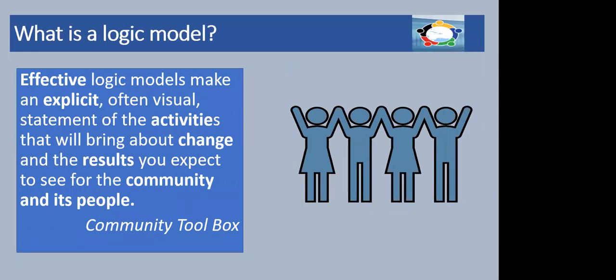So what is a logic model? This quote from the Community Toolbox is quite clear. It says an effective logic model makes an explicit, often visual statement of the activities that will bring about change and the results you expect to see for the community and its people. The first word — 'effective' — is important: we need to design a logic model that's going to suit the evaluation and faithfully record the intervention that we're trying to assess.